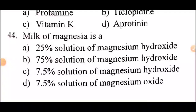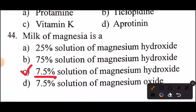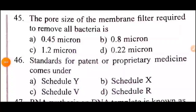Question 44 of 60: What is milk of magnesia? Answer is Option C: 7.5% solution of magnesium hydroxide.